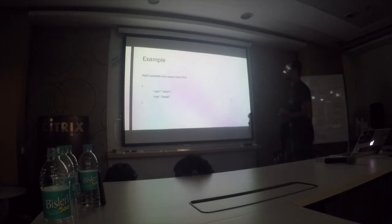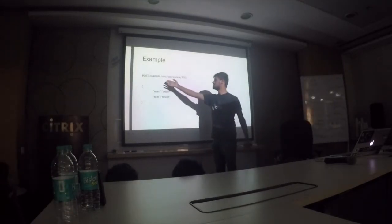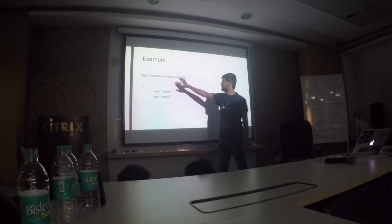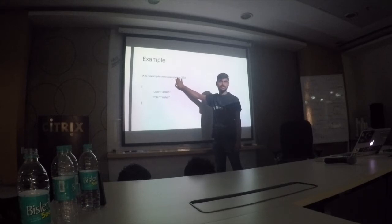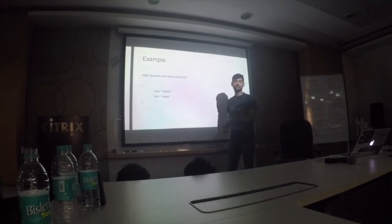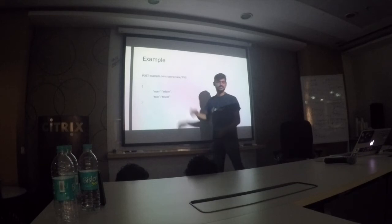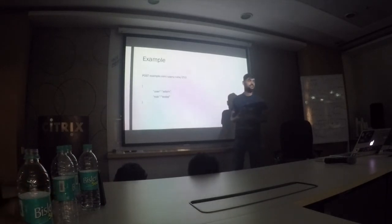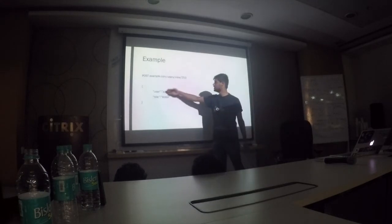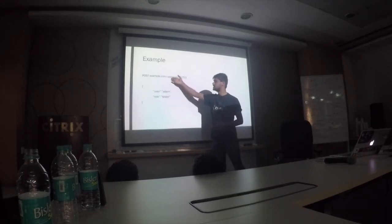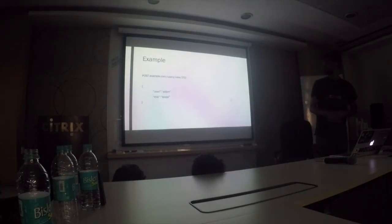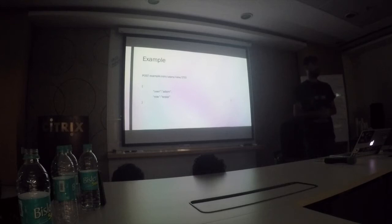These parts are called resources because they give you output based on that. Users — this is called a collection of resources — and these parameters are individual resources. This is the POST parameter or data for this particular endpoint. Now, what kinds of attacks are possible in this particular example? How many different attacks can we launch?